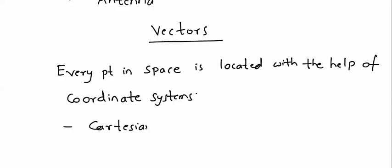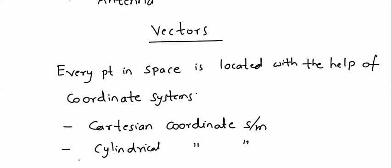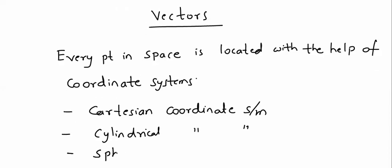First is Cartesian Coordinate System. Second one is Cylindrical Coordinate System. And the third one is Spherical Coordinate System. All students might be familiar with Cartesian Coordinate Systems, because in Mathematics also we generally come across Cartesian. But students are very less familiar with Cylindrical and Spherical Coordinate Systems. Here, you need to be thorough with Cylindrical as well as Spherical Coordinate Systems and must be able to use them properly.